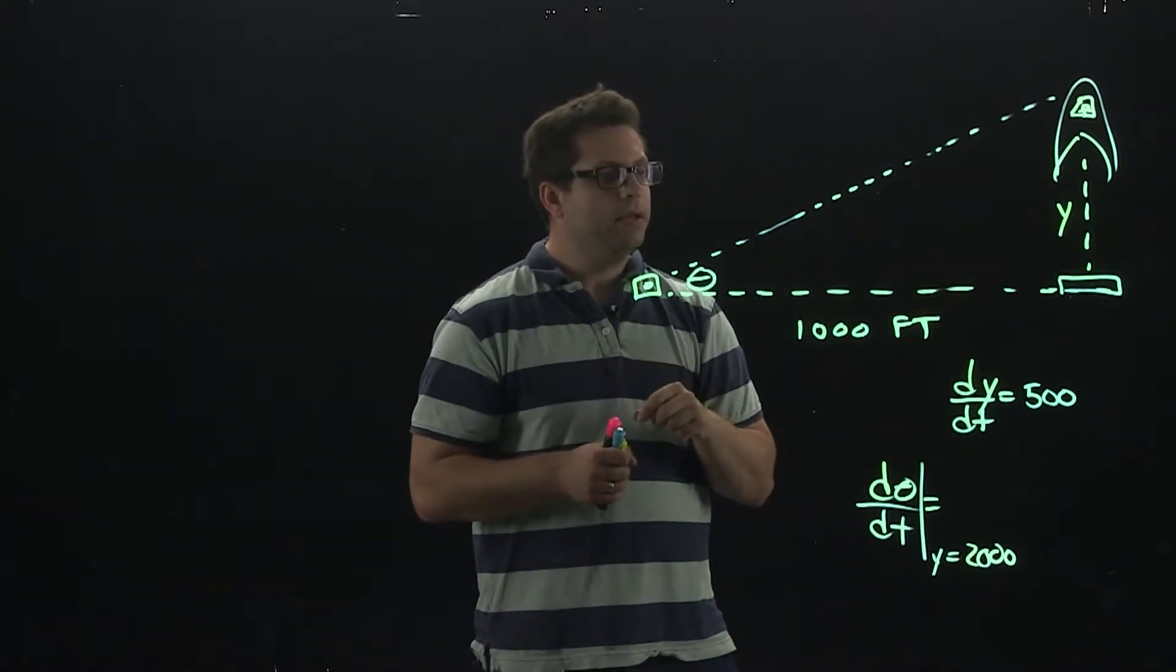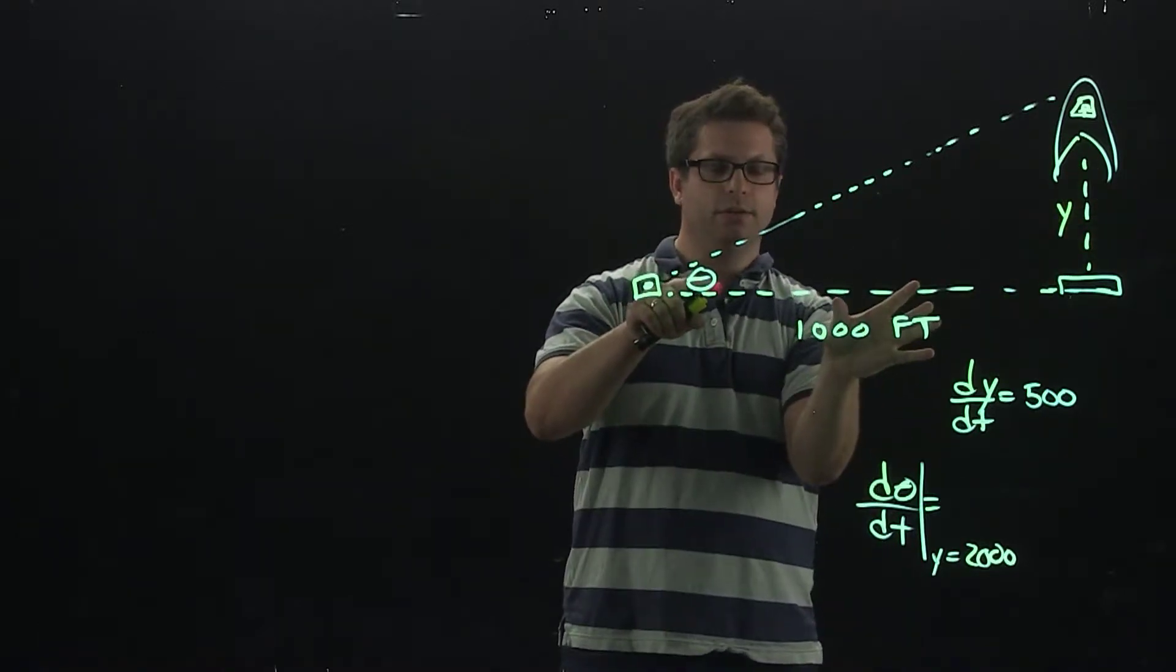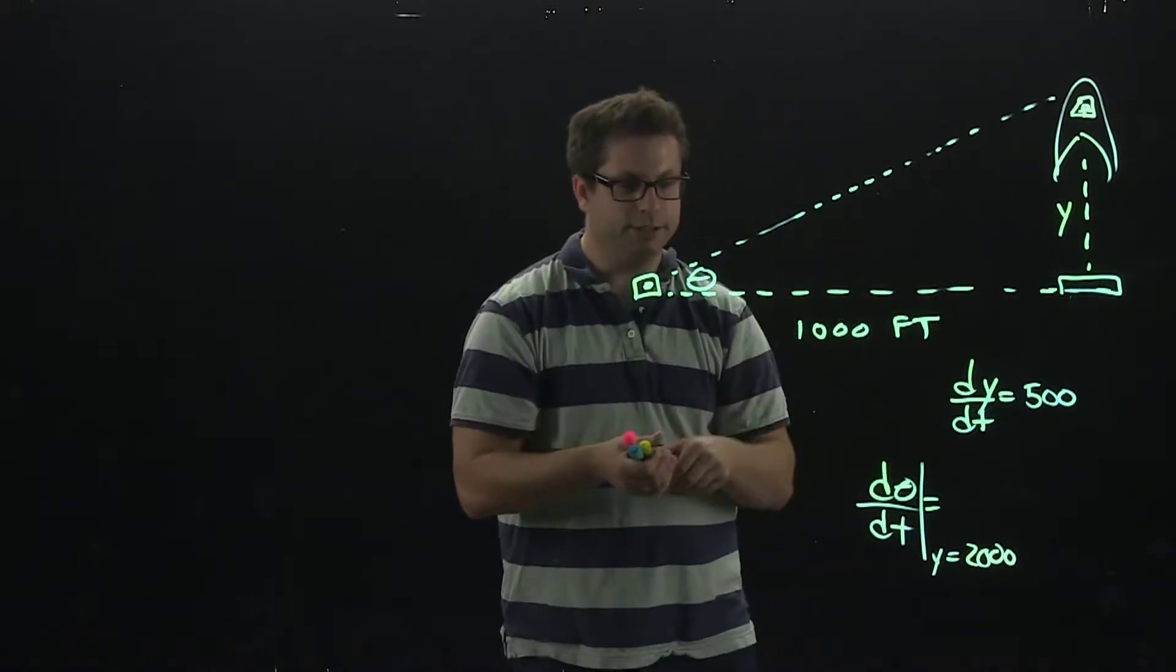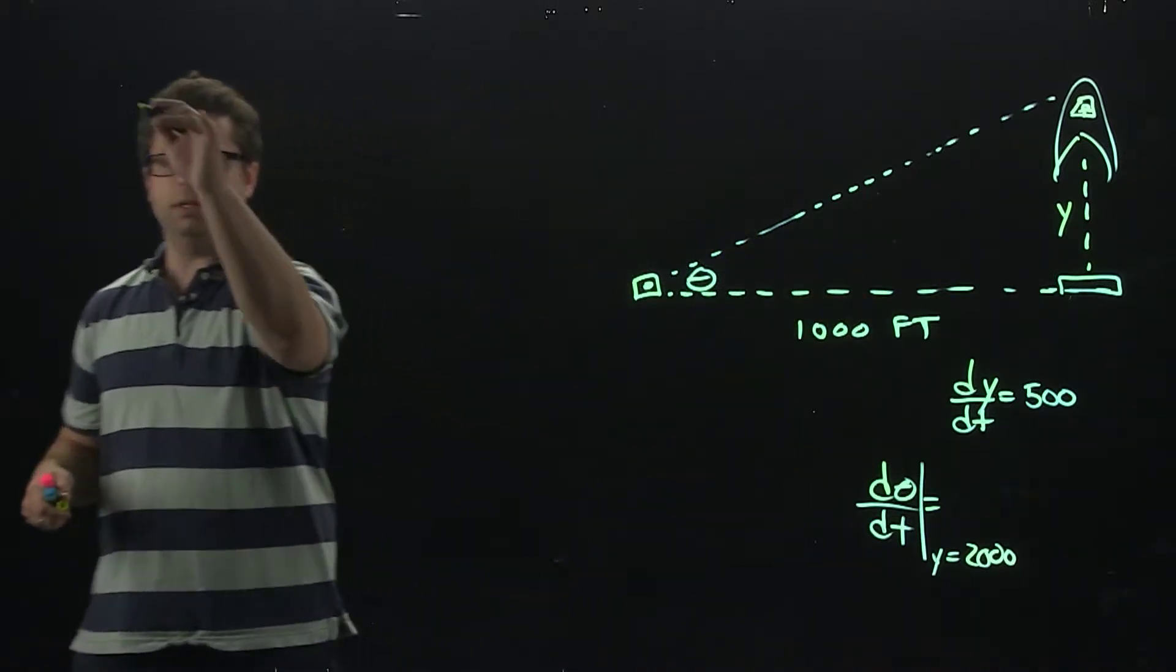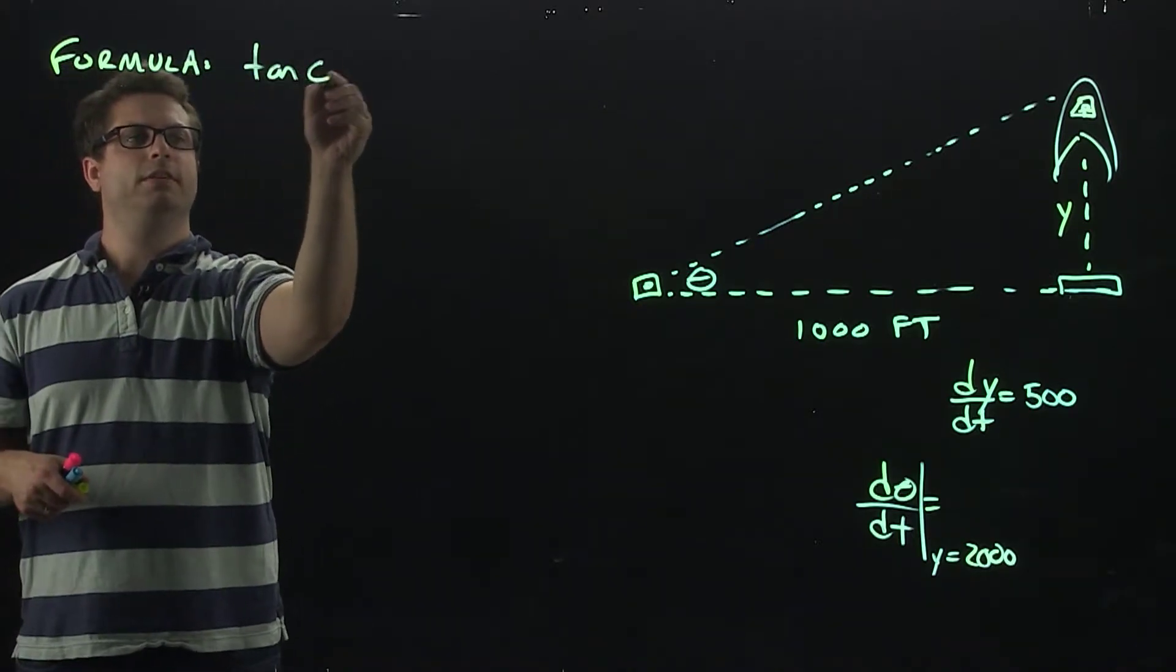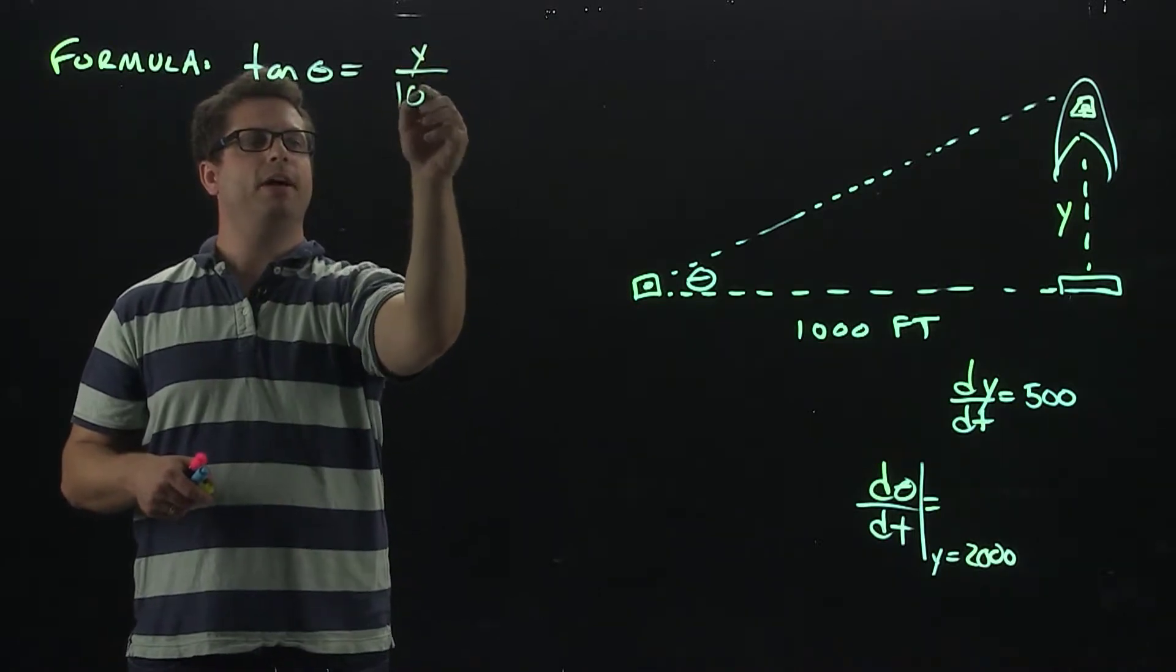We have an opposite angle and adjacent angle. Of the SOHCAHTOA, we're going to use the TOA, the tangent. Let's write that down as our formula. So, we know that tangent of theta is going to be y over 1,000.